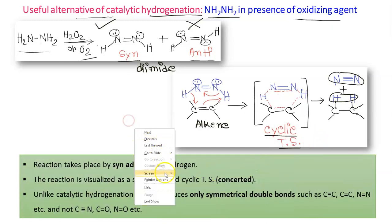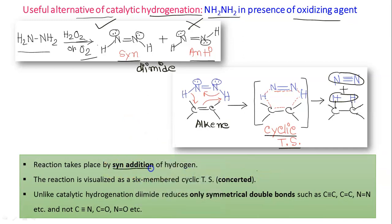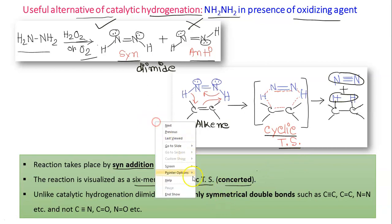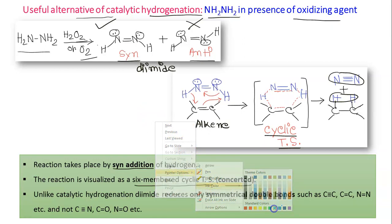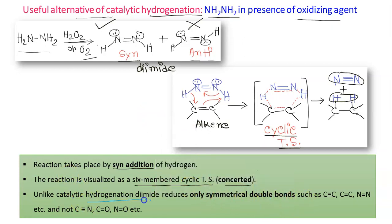The reaction proceeds by syn addition via a six-membered cyclic, concerted transition state — bond breaking and bond making occur simultaneously. Importantly, unlike catalytic hydrogenation, diimide reduces only symmetrical double bonds (C=C) and not unsymmetrical bonds such as C=N, C=O, or N=O. So if a molecule contains both a symmetrical double bond and an unsymmetrical double or triple bond, diimide will selectively reduce only the symmetrical one.